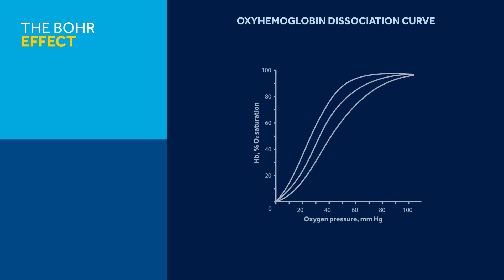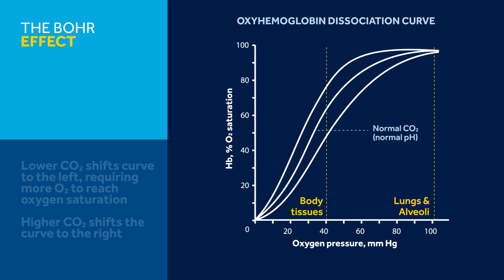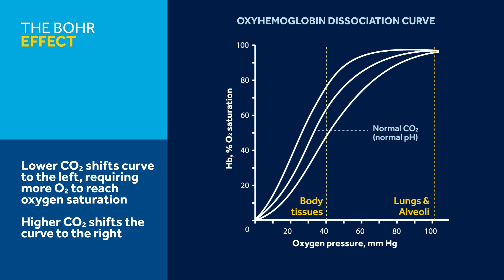The Bohr effect describes the relationship between blood pH and hemoglobin's affinity toward oxygen. When blood pH is low — more acidic — hemoglobin has a lower affinity than normal for oxygen, so oxygen unbinds more readily at the tissue. When pH is higher — more alkaline — hemoglobin has a greater affinity than normal for oxygen, making the oxygen available to tissue less than normal.